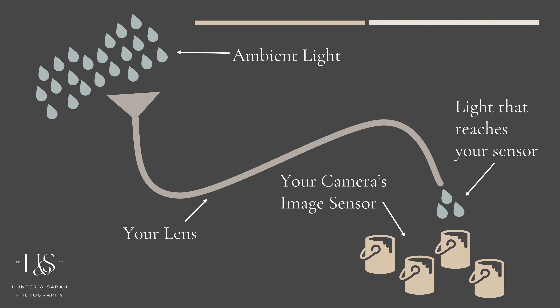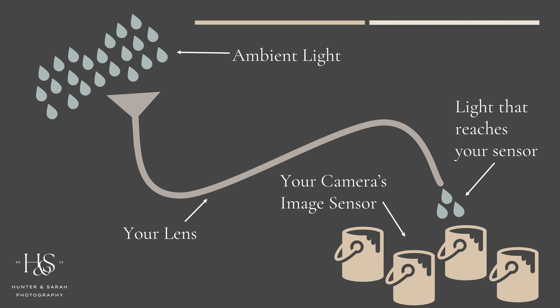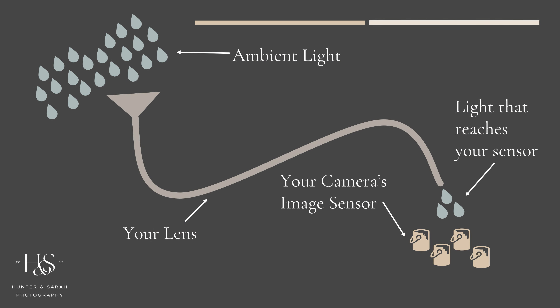So now that you know on a very basic level what ISO is, let's talk about what it actually does. Just like with aperture and shutter speed, ISO has two main effects. And the first is, of course, light. As you increase your ISO — going from ISO 200 to ISO 400 to 800 — your camera will become more and more sensitive to light. So that means without changing your aperture or your shutter speed, your images will just basically magically get brighter. On the other hand, as you decrease your ISO — taking it from 400 down to 200 or to 100 — your camera sensor will become less sensitive to light, which makes your images darker. Here is that same diagram with ISO's effect on the exposure of your image taken into account.